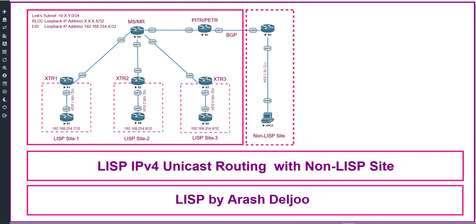As the incremental adoption of LISP occurs over time, there will be a requirement for communication between the LISP and non-LISP site. No service within an enterprise or data center is turned on overnight — new services, hardware, and protocols are introduced in phases. Because LISP is a completely new routing system, it will take time to adopt it, and LISP designers addressed these challenges by introducing devices with roles specifically designed to interconnect LISP to non-LISP sites.